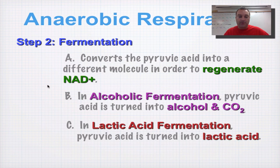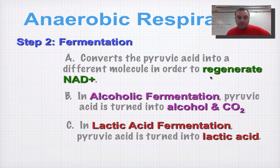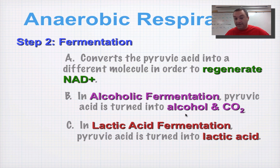During fermentation, your number one job is to regenerate the NAD+. This would have been done by the electron transport chain if we had oxygen available. There are two types of fermentation. Number one is called alcoholic fermentation. When you do alcoholic fermentation, your pyruvic acid is turned into alcohol — hence the name alcoholic fermentation — and CO2.